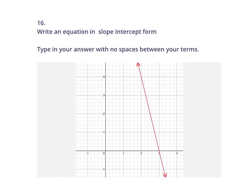This is a review for tomorrow's quiz, and from the practice quiz, this is the one that people have missed the most. They're asking you to write an equation in slope-intercept form. We know that slope-intercept form is y equals mx plus b, so all we need to do is find a slope and find the y-intercept.